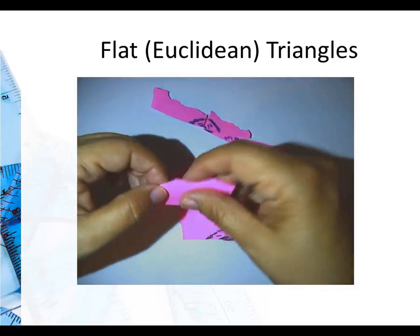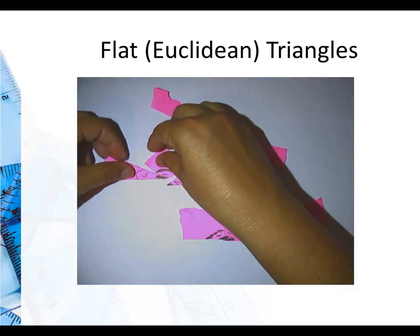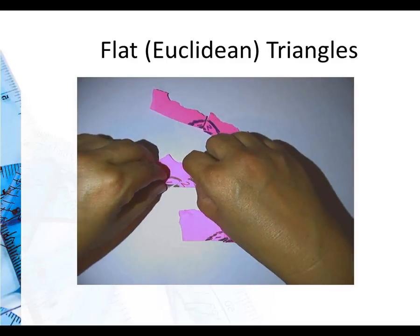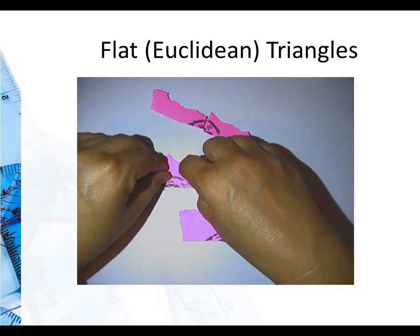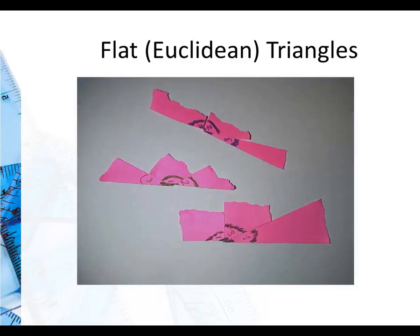Even this obtuse triangle will follow the same behavior. I'll tear off all the angles. There's angle two, now put it with angle one and angle three. And look at that, they all make a straight line.